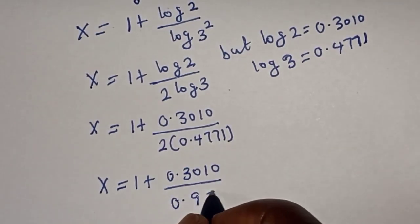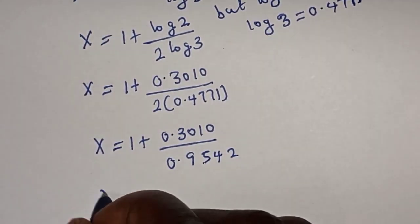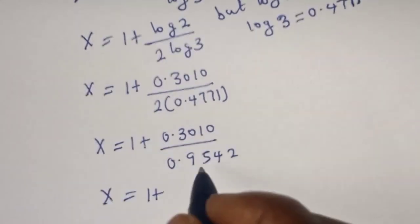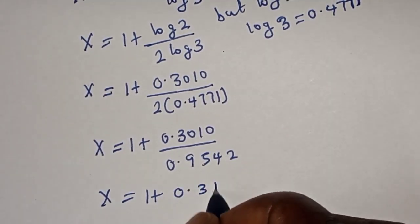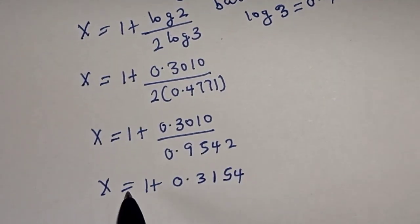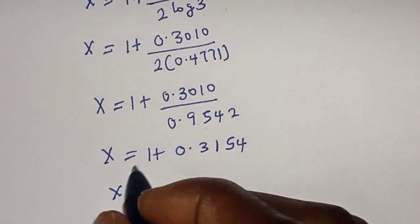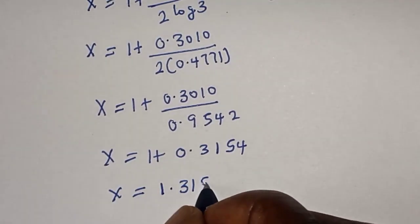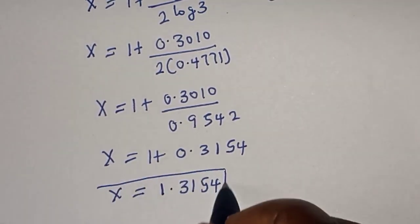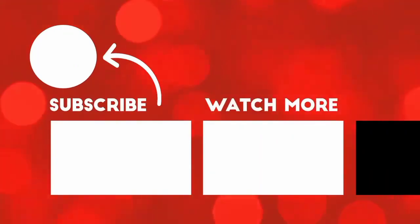Then s is equal to 1 plus 0.3010 over 0.9542. Dividing gives 0.3154, and adding these together we have s is equal to 1.3154, and this is our final answer. Before you leave, like, share, comment and subscribe. Thank you, bye.